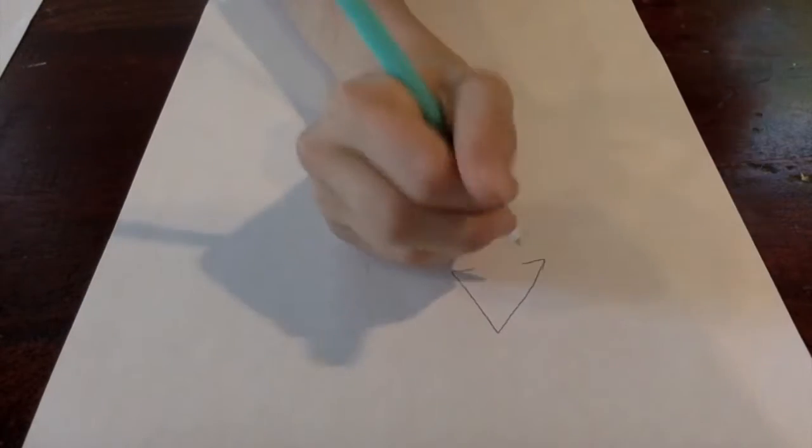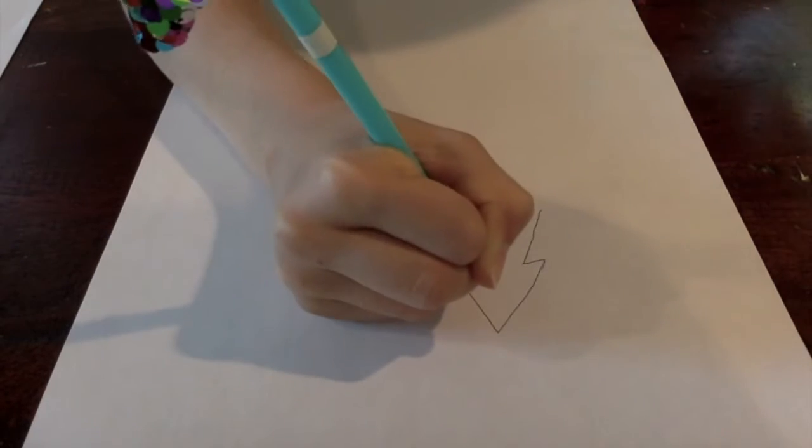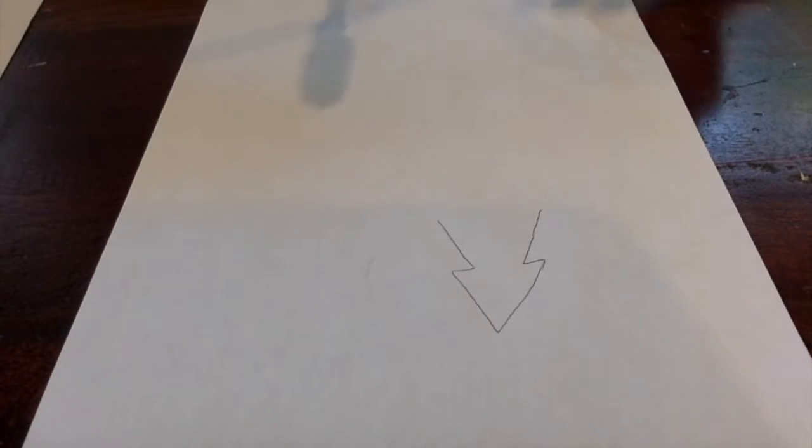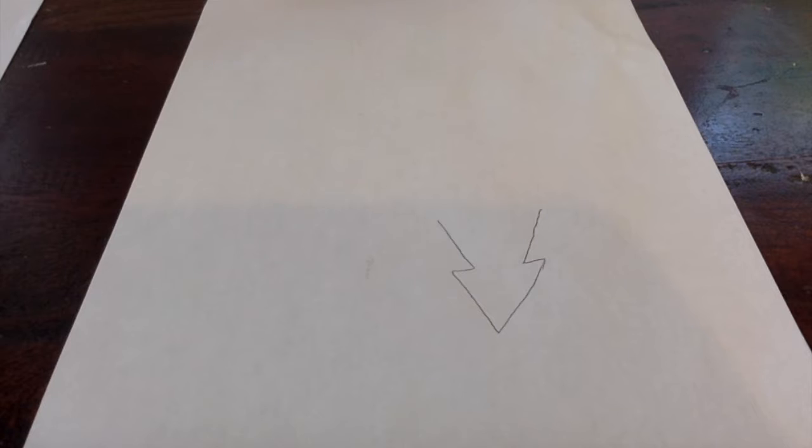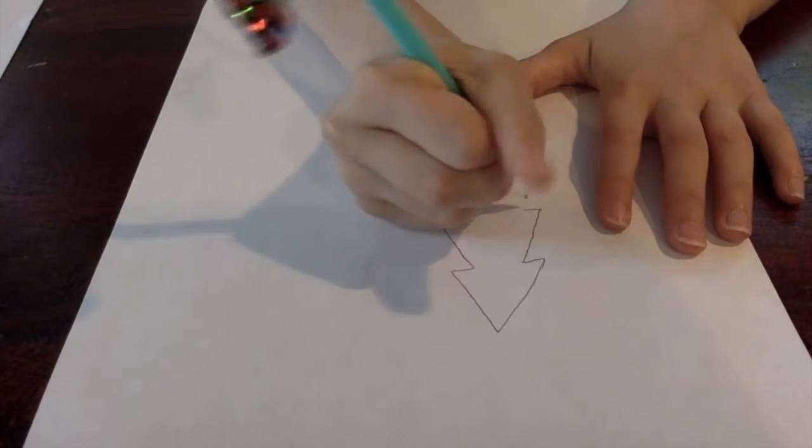Now you're going to draw a line coming out of both of the lines you just drew, kind of looking like an arrow. After that, you want to do the same thing you did with the first triangle. And do the same, but this time make it even bigger.